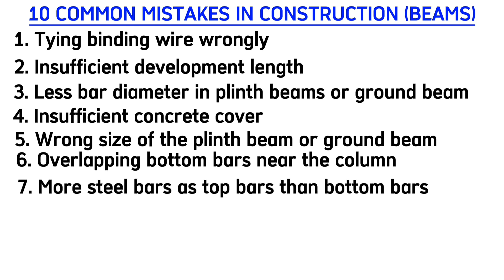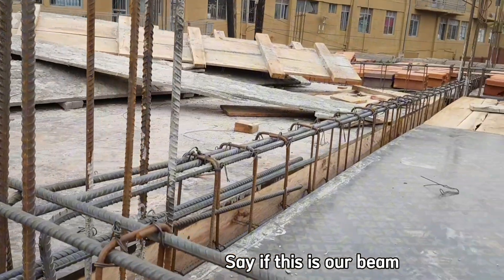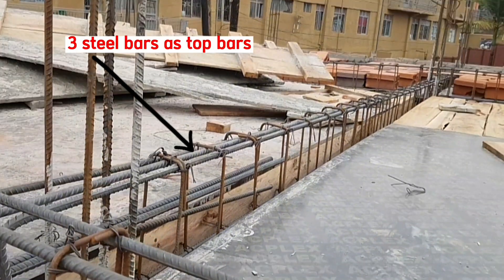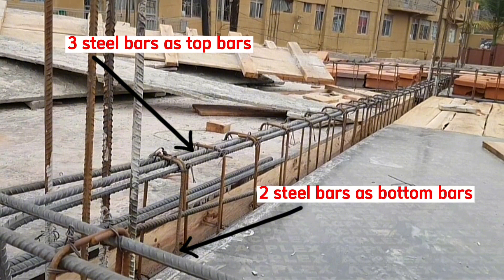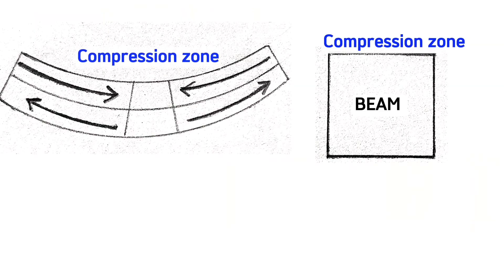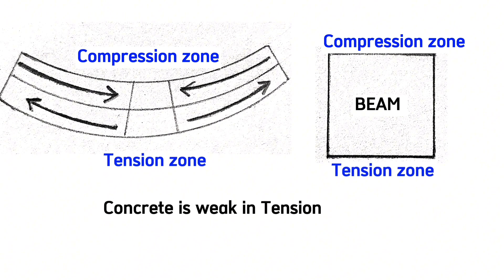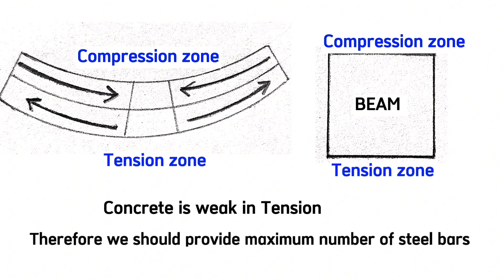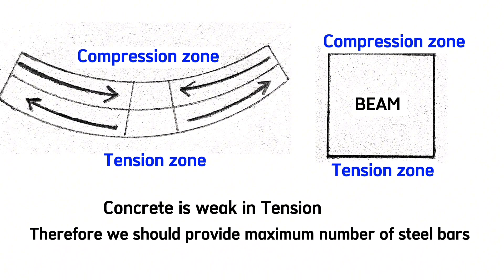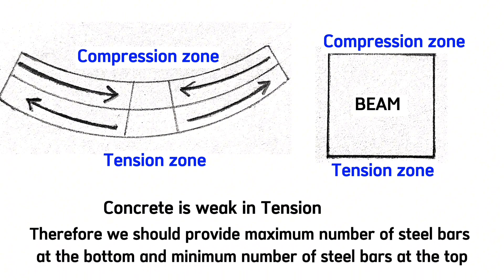Common mistake number seven is providing more steel bars as top bars than bottom bars. Say if this is our beam and we have three steel bars on top and two steel bars at the bottom — that is very wrong. This is the compression zone and this is the tension zone. Concrete is weak in tension, therefore we should use the maximum number of steel bars in the bottom position and the minimum number in the top position.